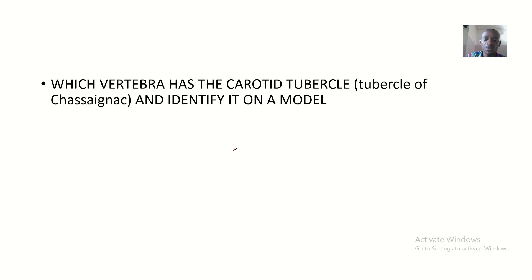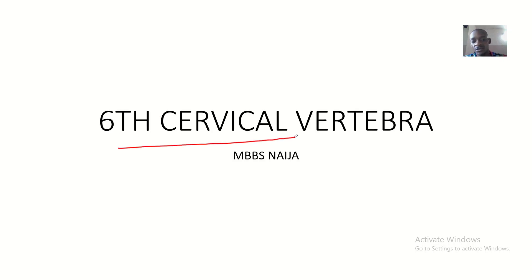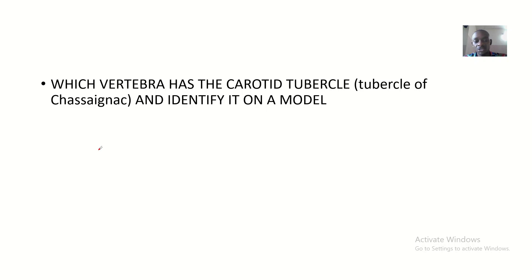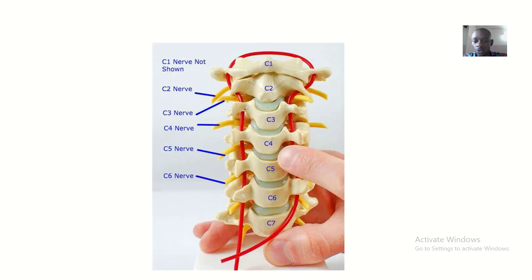In this lecture we'll be talking about the carotid tubercle, also known as the tubercle of Chassignac. This tubercle is actually the tubercle of the sixth cervical vertebra, which is why this lecture is termed the sixth cervical vertebra. A common exam question is: which vertebra has the carotid tubercle, or the tubercle of Chassignac? You should be able to identify this tubercle — it is the C6.